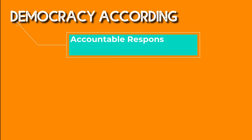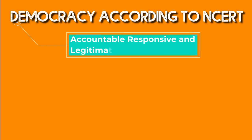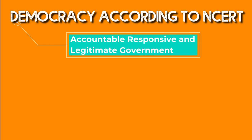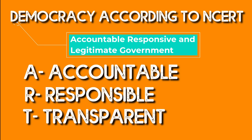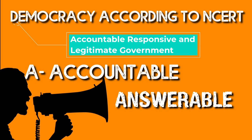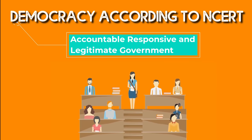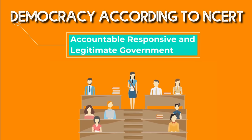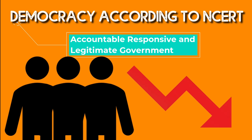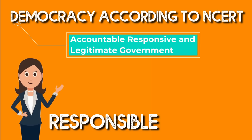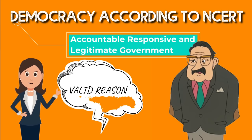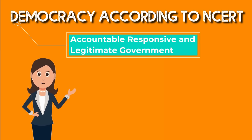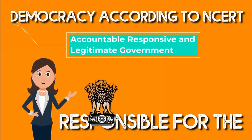We have some outcomes: the government is responsible, legitimate, and accountable. After that, we analyzed the economic aspects of democracy. There are some points on which we can conclude that we get our expected outcomes from democracy.